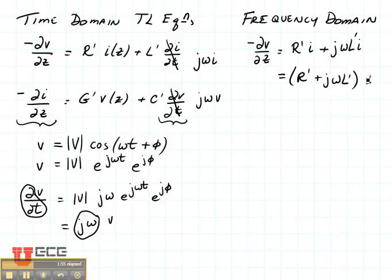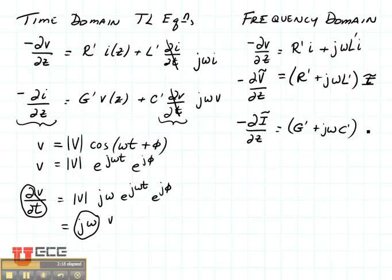Here i needs to be the phasor term and v also needs to be in phasor form. Now let's do it for the current equation. We're going to have minus di/dz equals g' plus j omega c' times v.